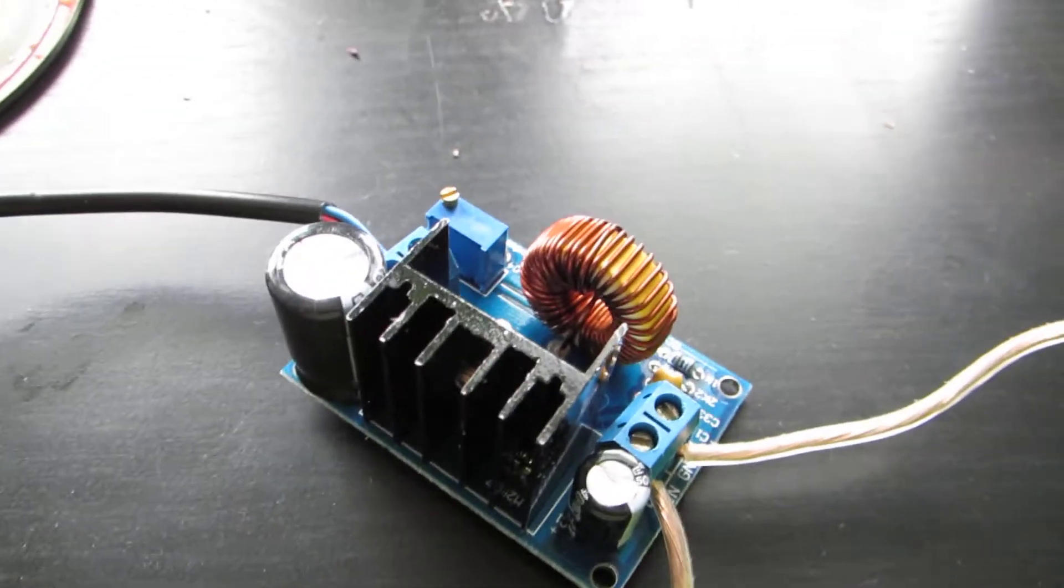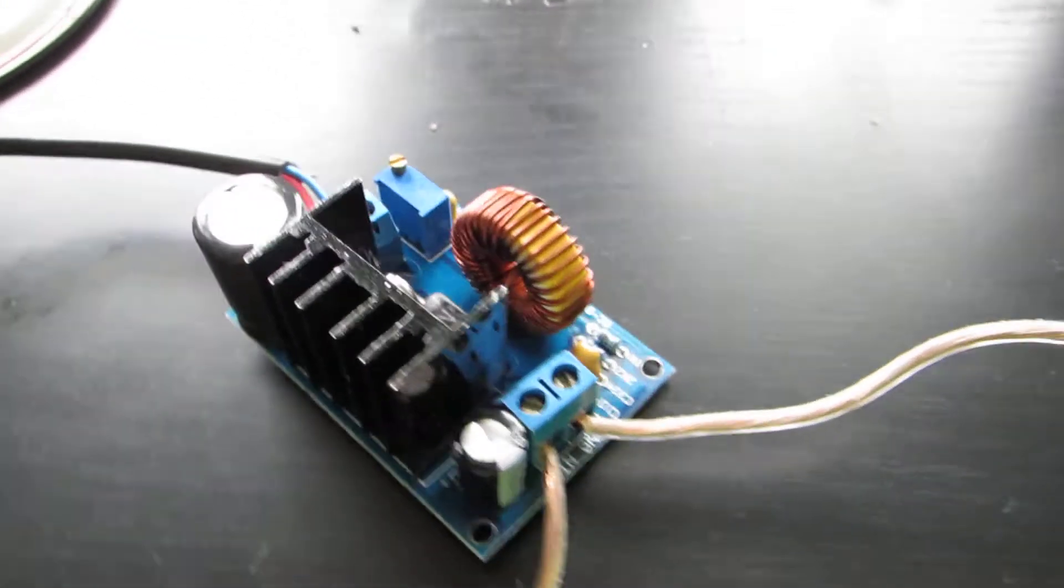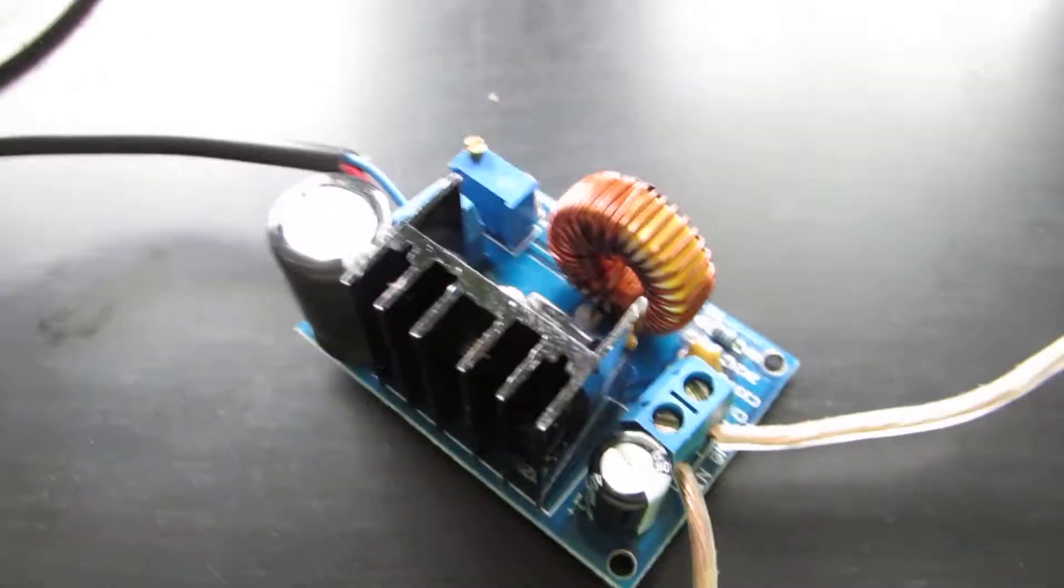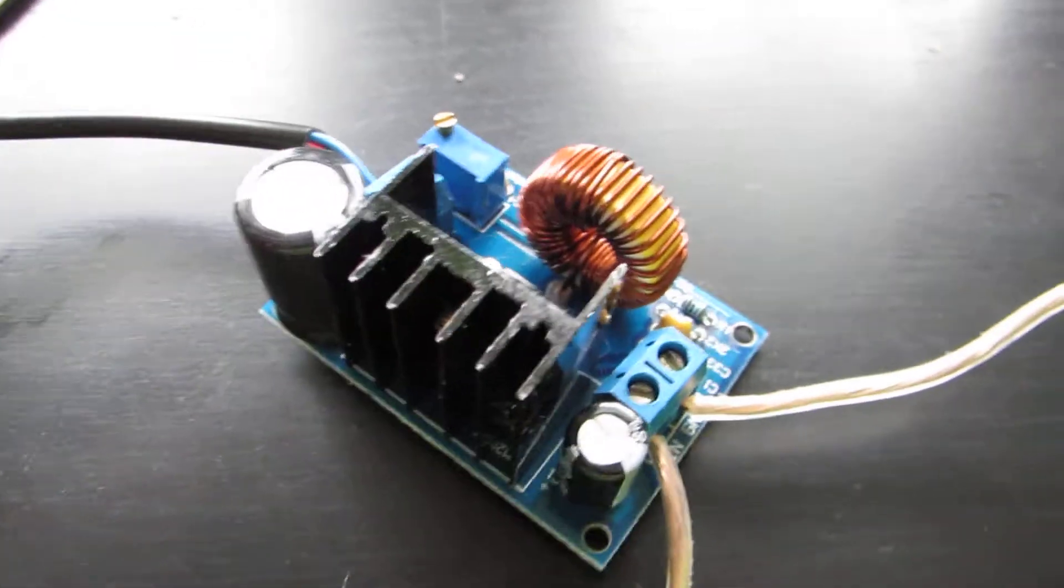This is my 12 volt to 24 volt up converter. I bought this on eBay for about 17 or 18 dollars. They shipped it from Hong Kong. It took about two weeks to get here.